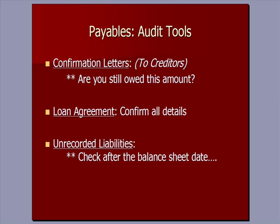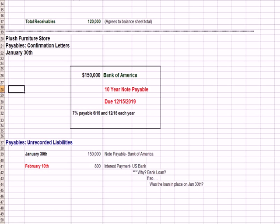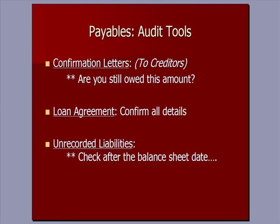One thing unique to payables is: what about bills that are paid after the balance sheet date? For example, if the balance sheet date is January 30th and the Plush Furniture Store had hidden a bunch of bills in a drawer, and after the audit was done they paid all those bills in mid-February, we would call those unrecorded liabilities. They were owed as of January 30th but weren't recorded — which means we're understating our liabilities. One way we detect this is by looking at the checkbook after the balance sheet date to see what checks were written, and whether those payables were posted in the financials during our audit.